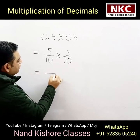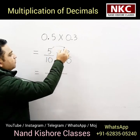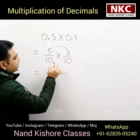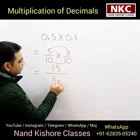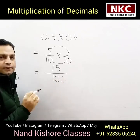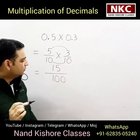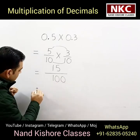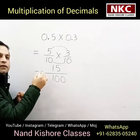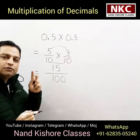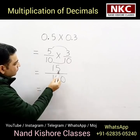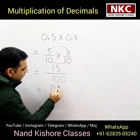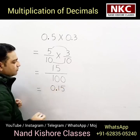Now, just multiply them. Numerators are multiplied with each other: 5 times 3 is 15. Denominators are multiplied with each other: 10 times 10 is 100. Now, in the denominator two zeros are there, which means in the numerator, after the decimal, two digits should be there — digits 1 and 2. These are the two digits I am already having, so the answer is 0.15.